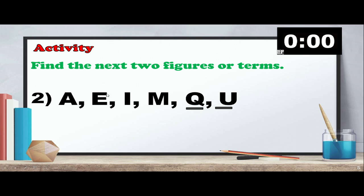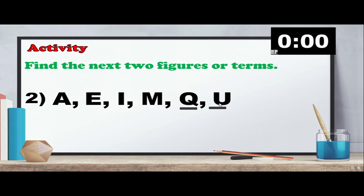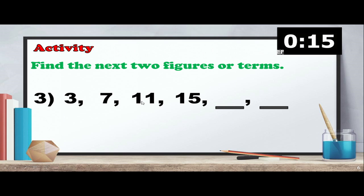E, F, G, H, I — skip four; then I, J, K, L, M — skip four; M, N, O, P, Q — skip four; Q, R, S, T, U. So the pattern is skip four letters each time.